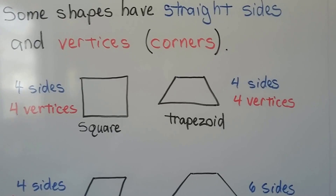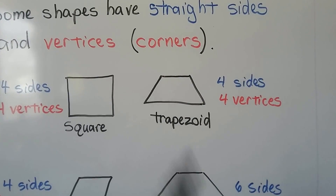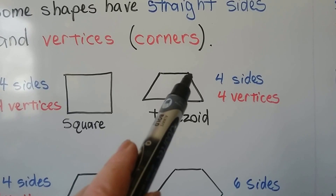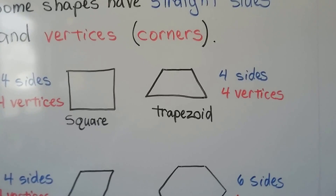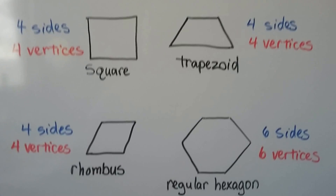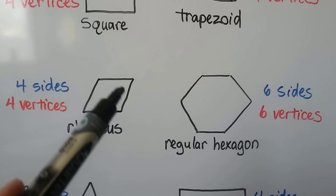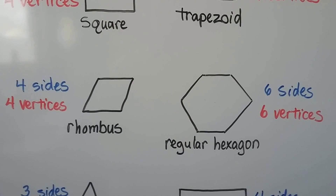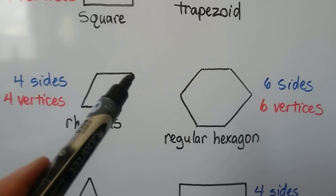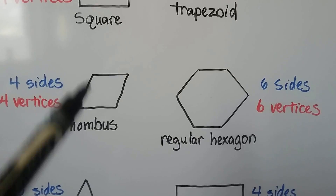A trapezoid has four sides — one, two, three, four — and it has four vertices, four corners. A rhombus has four sides — one, two, three, four — and it has four corners, four vertices.